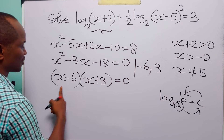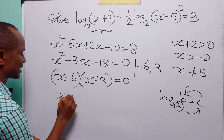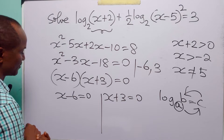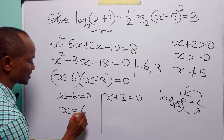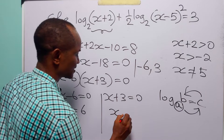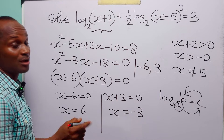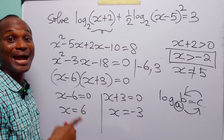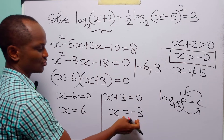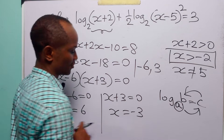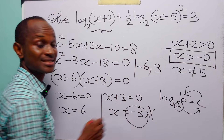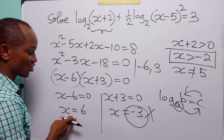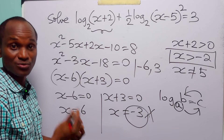From here, either x minus 6 equals 0 giving x equals 6, or x plus 3 equals 0 giving x equals minus 3. But remember x must be greater than minus 2, and minus 3 is less than minus 2, so that value is not acceptable. The only value of x that satisfies this logarithmic equation is x equals 6.